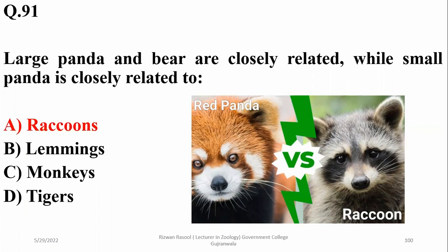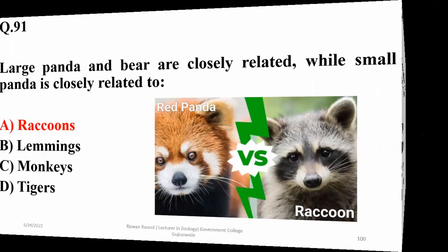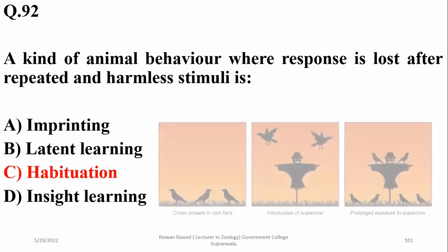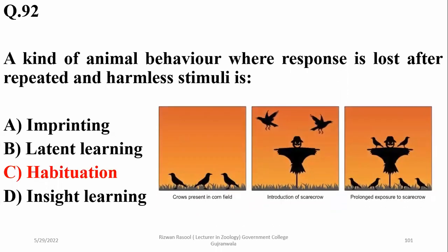While lemmings, monkeys, or tigers are quite different. Question 92: A kind of animal behavior where response is lost after repeated and harmless stimuli — this is a definition for a learning behavior known as habituation, which reduces the response against harmless and repeated stimuli, like the scarecrow example.